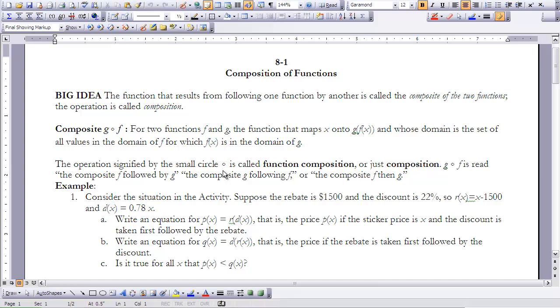Let's break that down. The operation signified by the small circle is called function composition, or just composition. This symbol is read the composite f followed by g, or the composite g following f, or the composite f then g. Basically what it means is we're going to take our function, our f of x function, and put that into our function g.